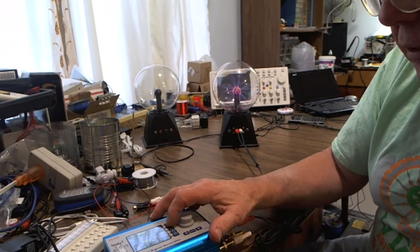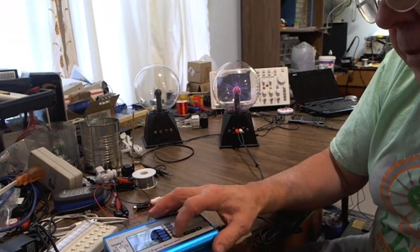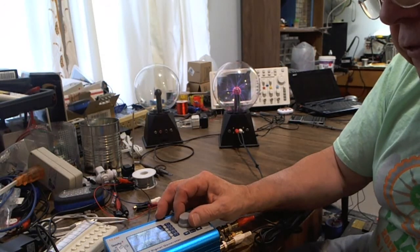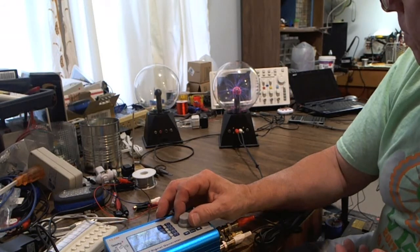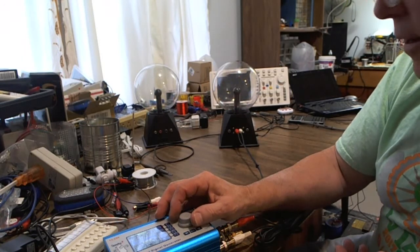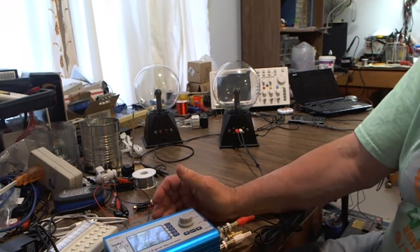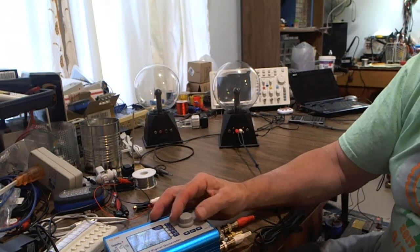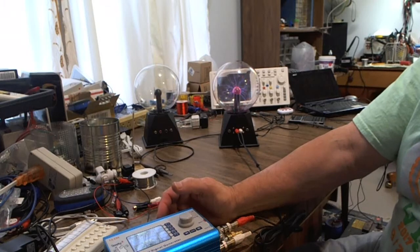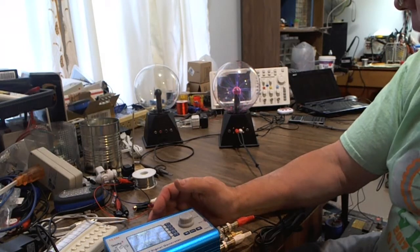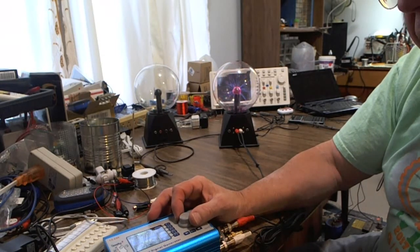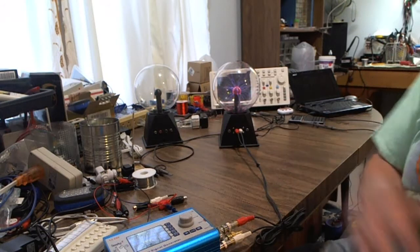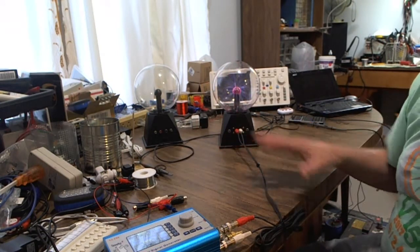I'm going to select channel two, get down to duty cycle. Right now I'm gating at 30 percent. Hard to tell the difference between 30 and 40 percent, but at 10 you can really see a gating of just 10 on 90 off. And of course I can go the opposite way, 90 on 10 off. Now 99.9 is like 100, you can't even see the thing flash off. 50 is common, so go back to 50 and that's where we'll leave it.